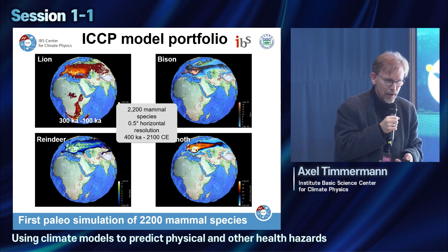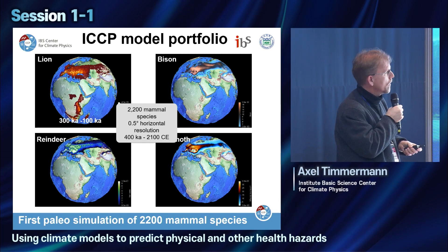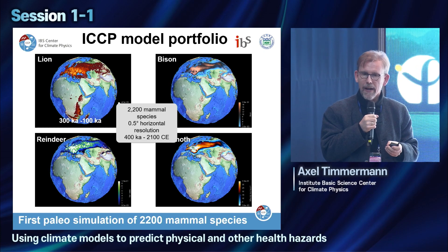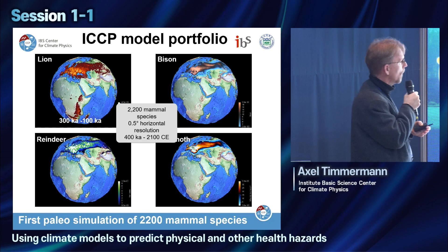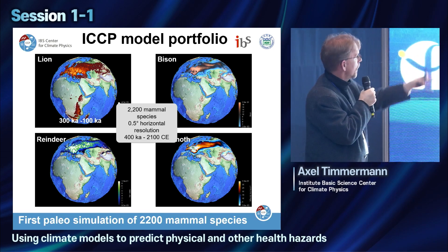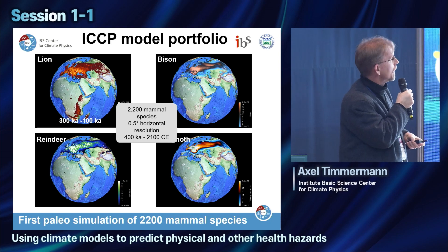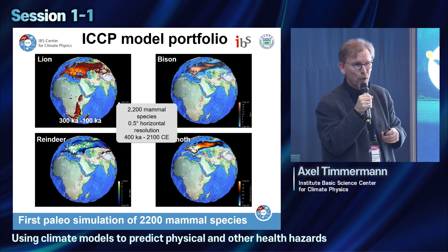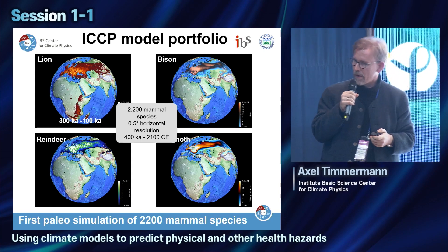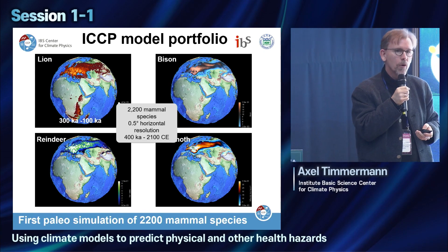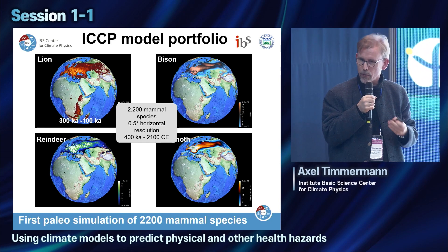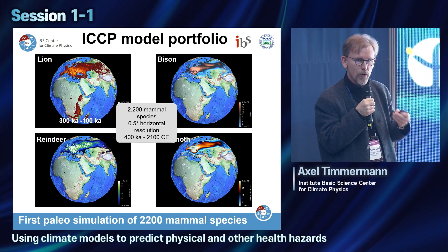We recently developed a model that simulates 2,000 mammal species on our planet and their interactions — the first of its kind. We are testing it in the past, over the last 300,000 years. It works quite well — there were actually lions in Europe in past periods. We will run it also for future climate scenarios, and combined with land use change data, it could help assess the risk of climate change driving zoonotic spillovers.